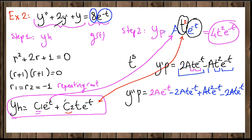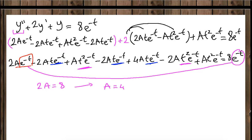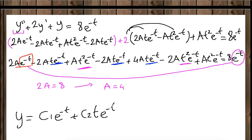Since we have found the homogeneous solution and the particular solution, we combine them. Our general solution is: y = c1·e^(-t) + c2·t·e^(-t) + 4t²·e^(-t). This is our general solution.